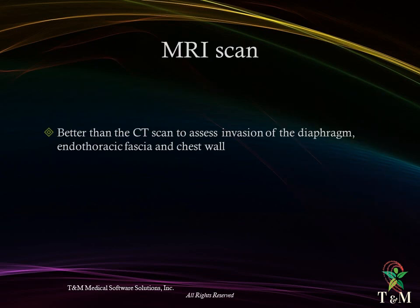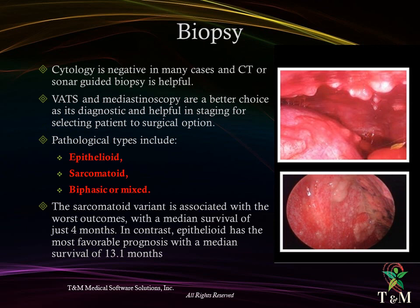MRI scan is better than CT scan to assess invasion of the diaphragm, endothoracic fascia, and chest wall. Biopsy: cytology is negative in many cases, and sonar- or CT-guided biopsy is helpful. Video-assisted thoracoscopy and mediastinoscopy are a better choice for diagnosis, and helpful in staging for selecting patients for surgical options.